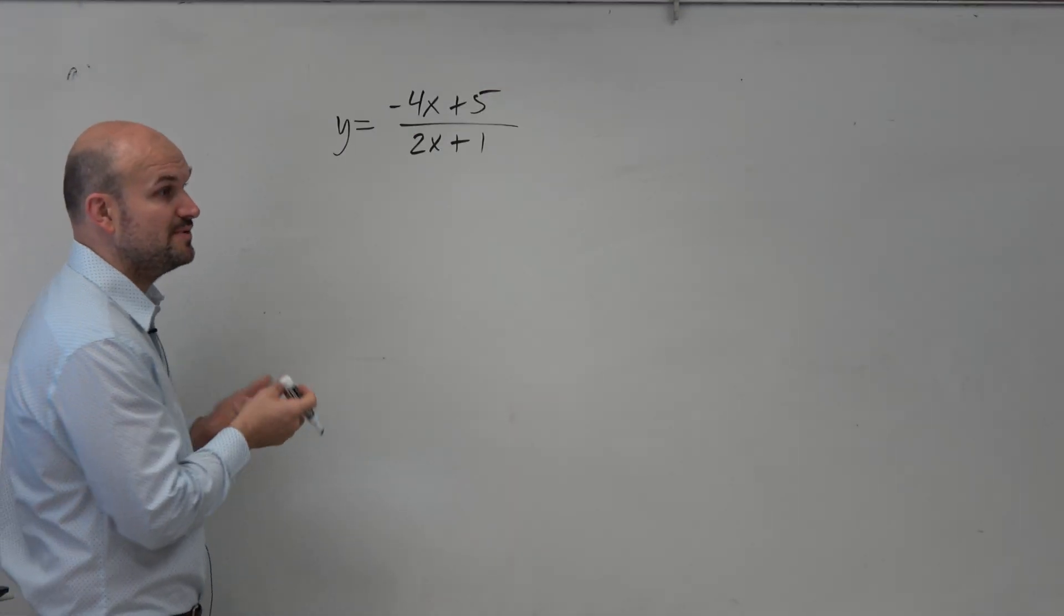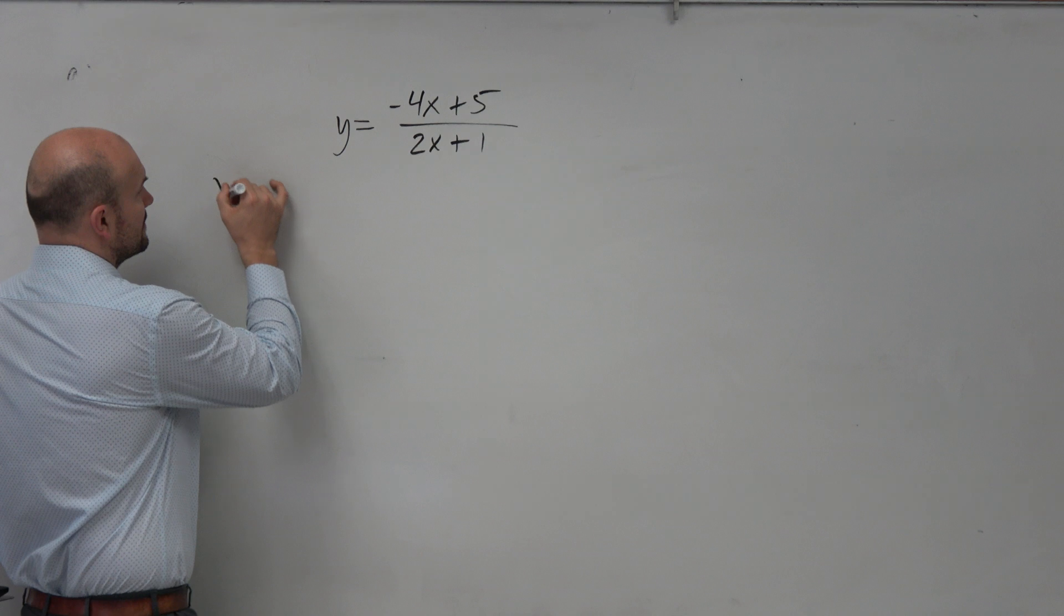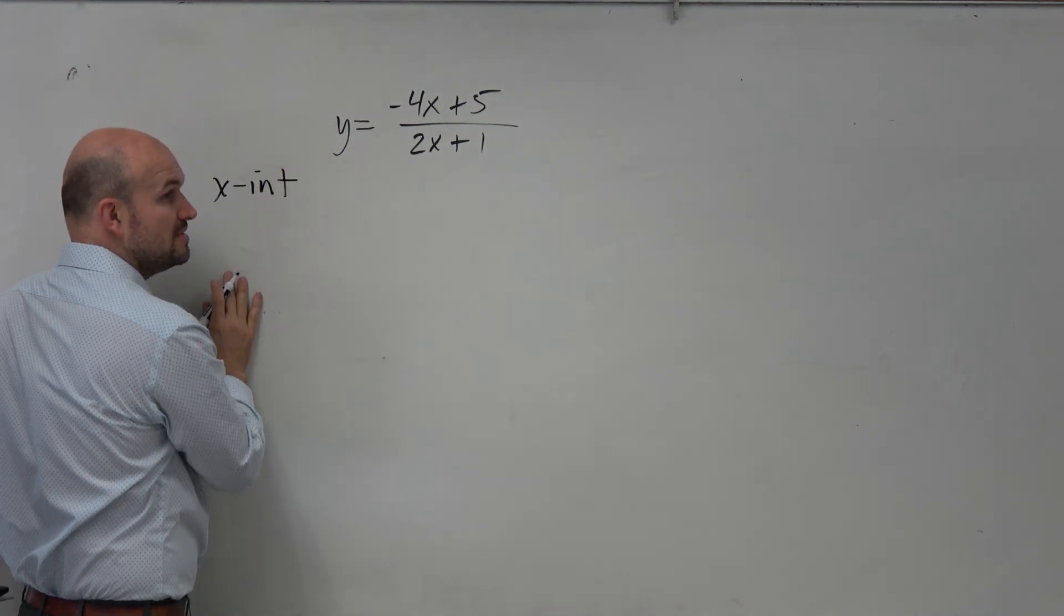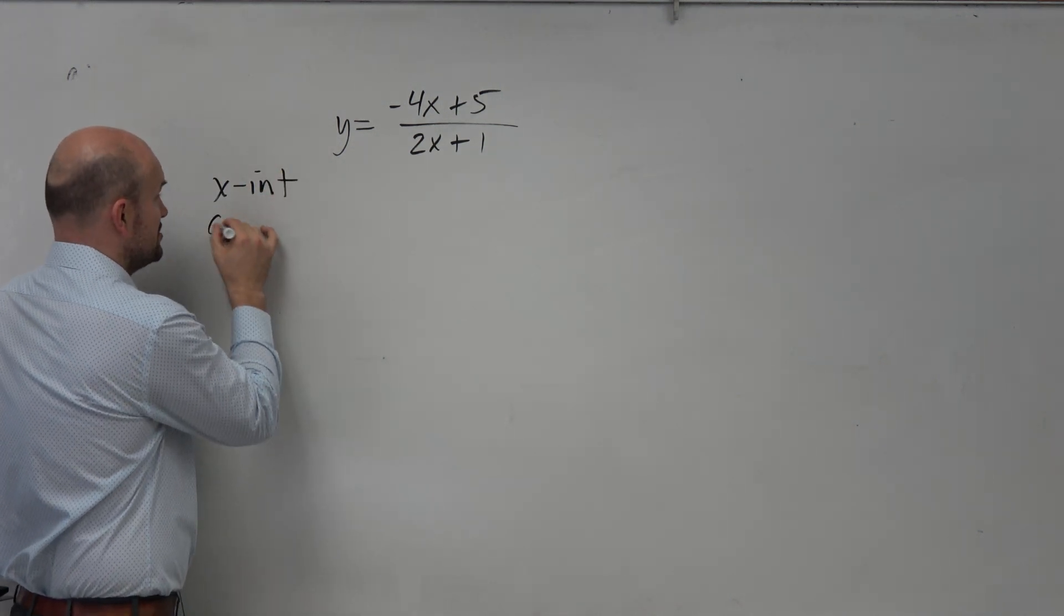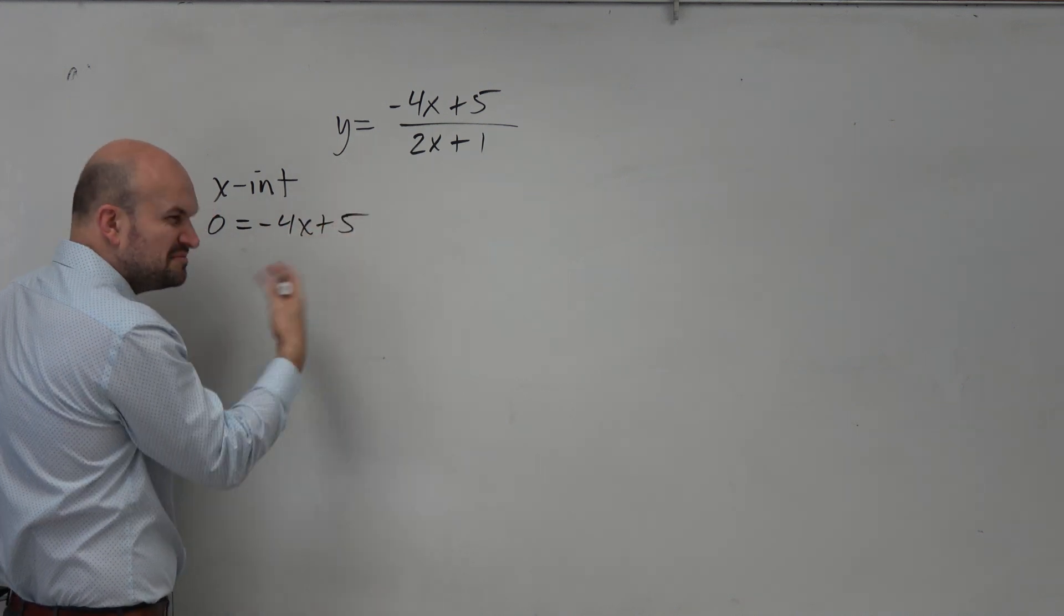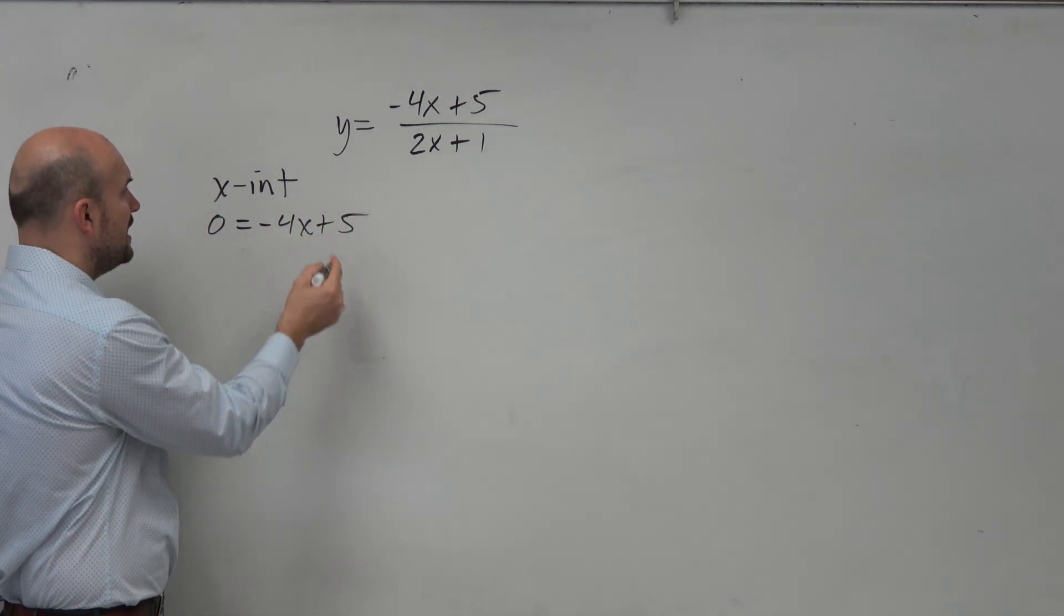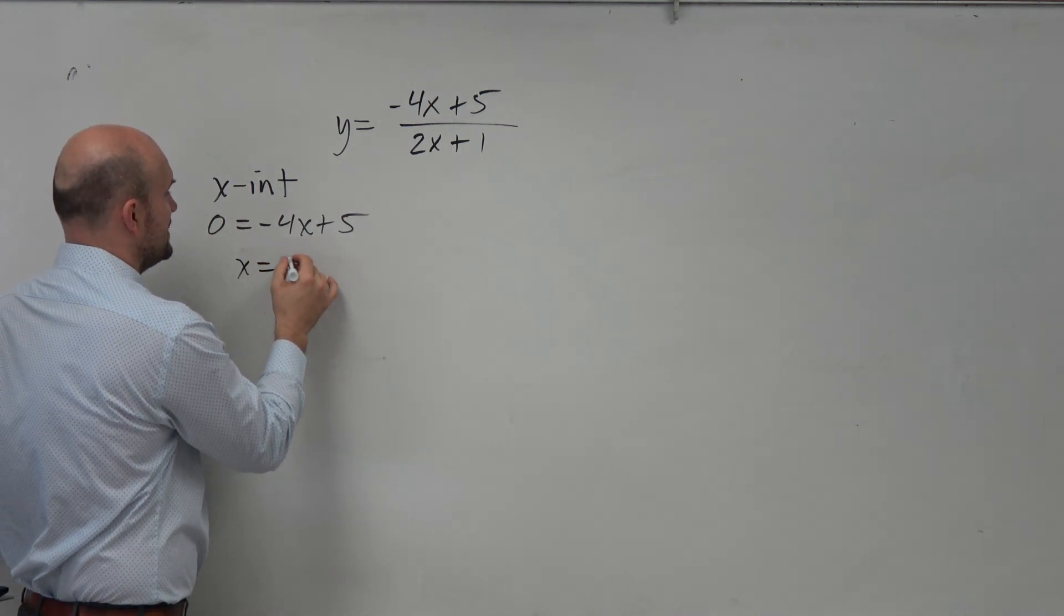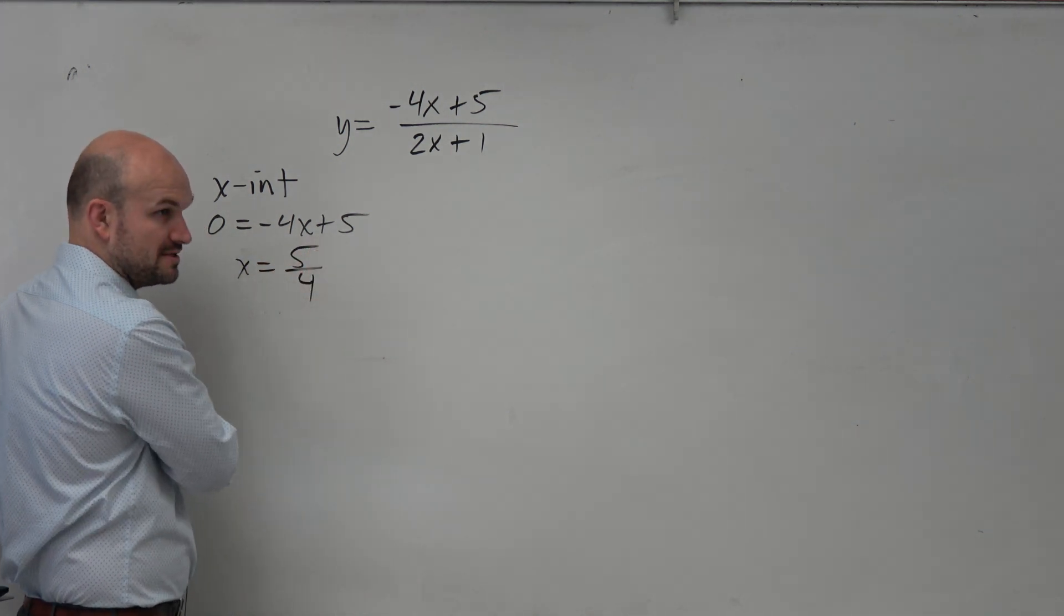First thing, we recognize this is a rational function. Therefore, the x-intercept is just the numerator set equal to 0. We already did it the slow way, so now we can do it the fast way. Subtract 5, divide by negative 4, x equals positive 5/4.